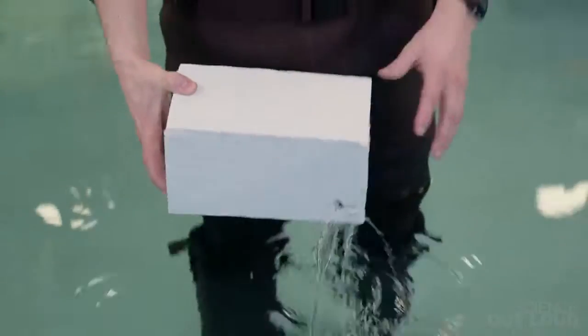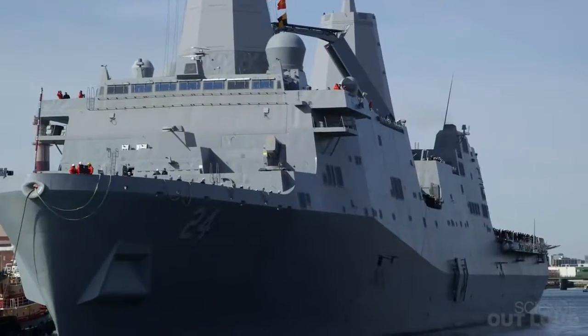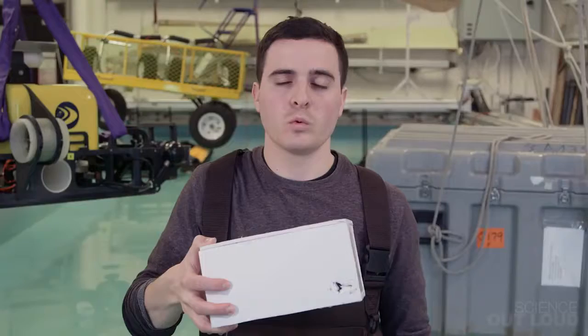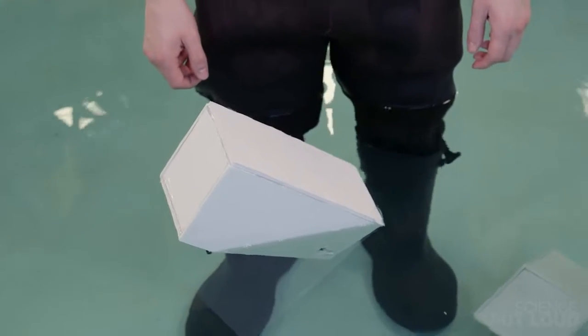This box uses the same kind of design that naval architects use to prevent ships a thousand times bigger from sinking. What's so special about this box that prevents it from sinking even with the big hole in its side?